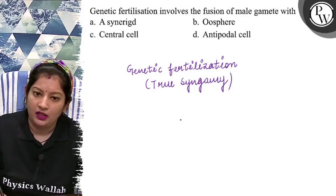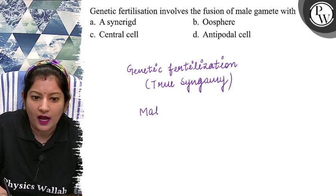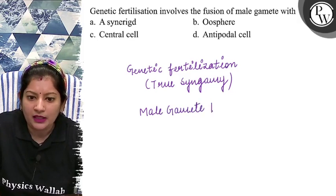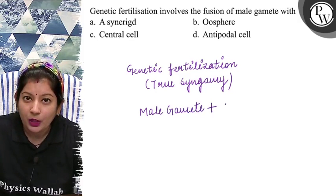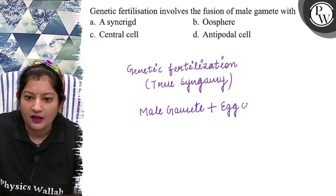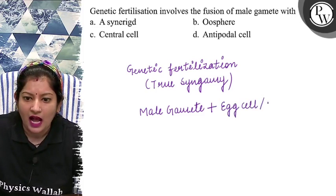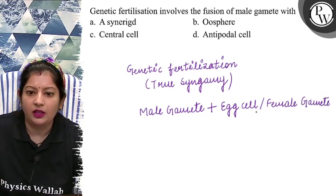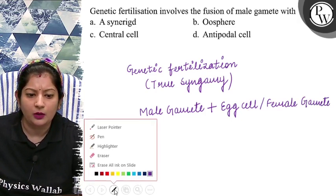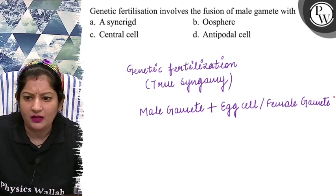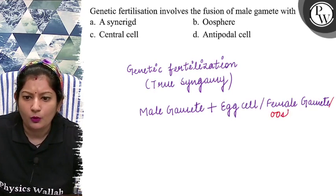अब होता क्या है? इसमें जो male gamete होता है, यह male gamete किसके साथ fuse करता है? Embryo sac के अंदर जो egg apparatus है, उसके अंदर जो egg cell है — या इसी को हम female gamete भी कह सकते हैं, या आप इसको oosphere भी कह सकते हो। बहुत सारे terms हैं — इसी को हम oosphere कह देते हैं।